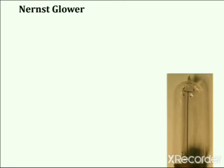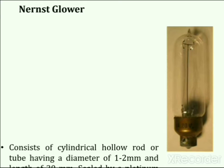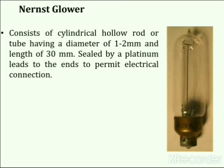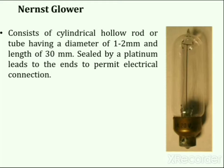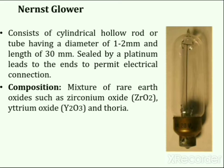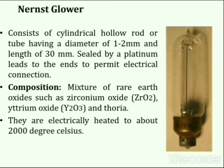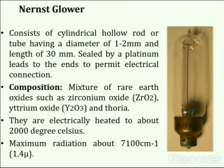The Nernst Glower consists of a cylindrical hollow rod or tube having a diameter of 1 to 2 mm and a length of 30 mm, sealed by platinum leads at its ends to permit electrical connection. It is composed of a mixture of rare earth oxides such as zirconium oxide, yttrium oxide, and thorium oxide. When heated to about 2000°C electrically, it generates IR radiation, providing maximum radiation at about 7100 cm⁻¹. Its lifetime depends on the operating temperature and the care taken in handling.